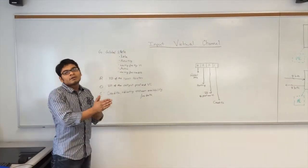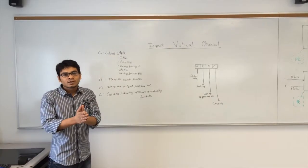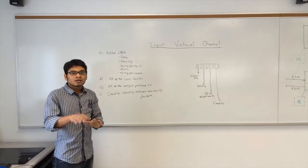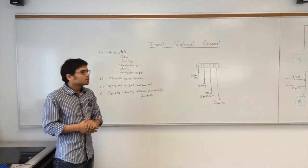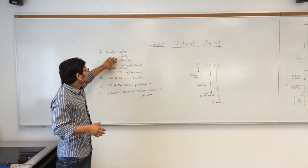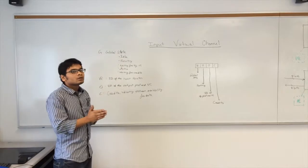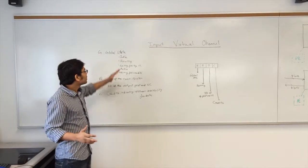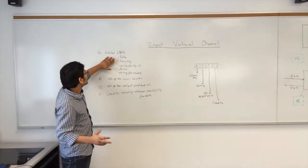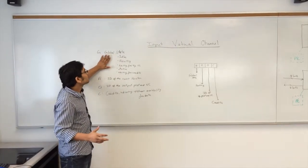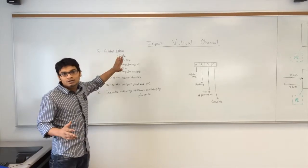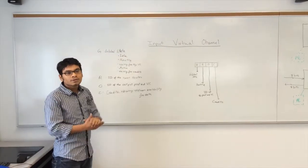When a packet arrives, the head flit contains a destination address which is sent to the routing computation unit, and the status of the G field changes to R, which means routing.